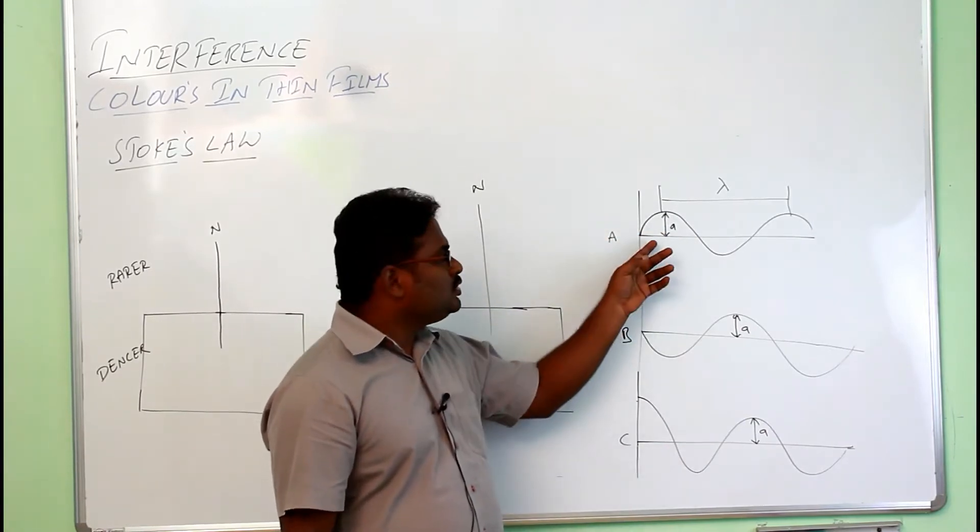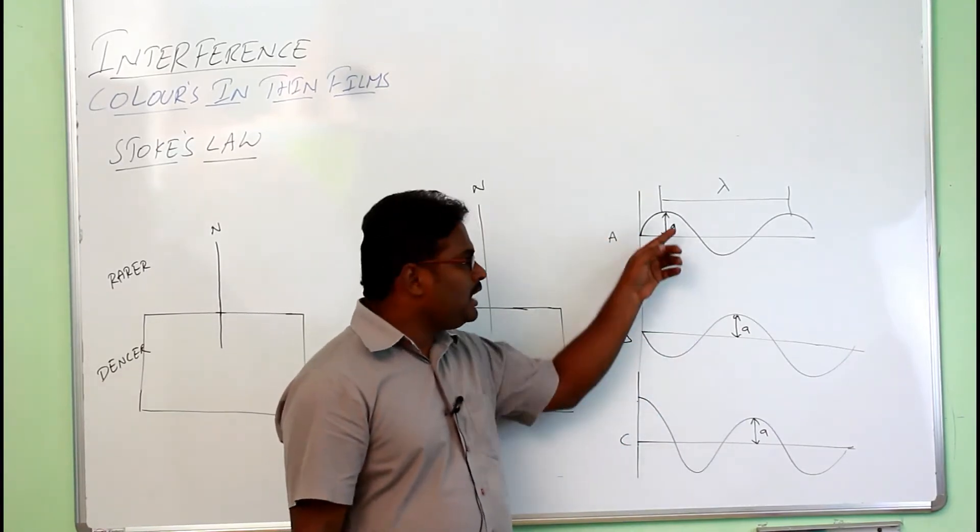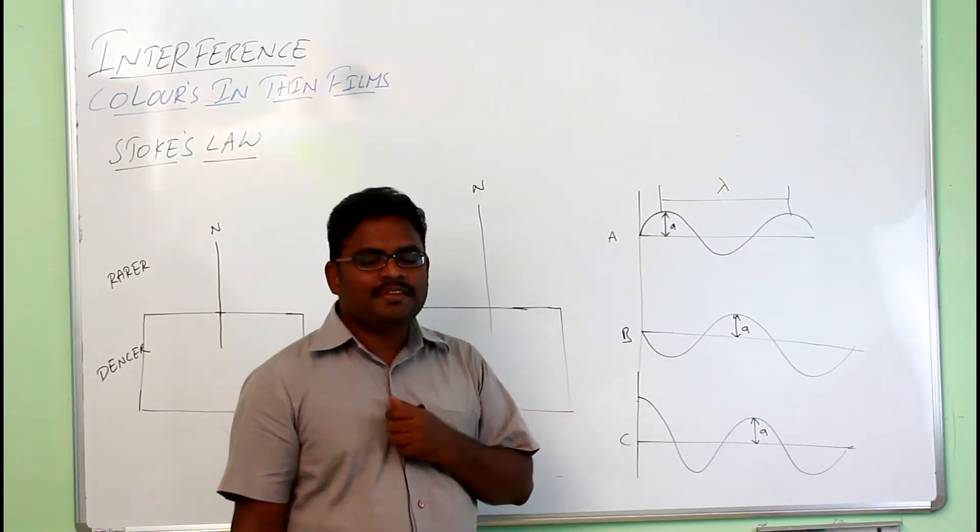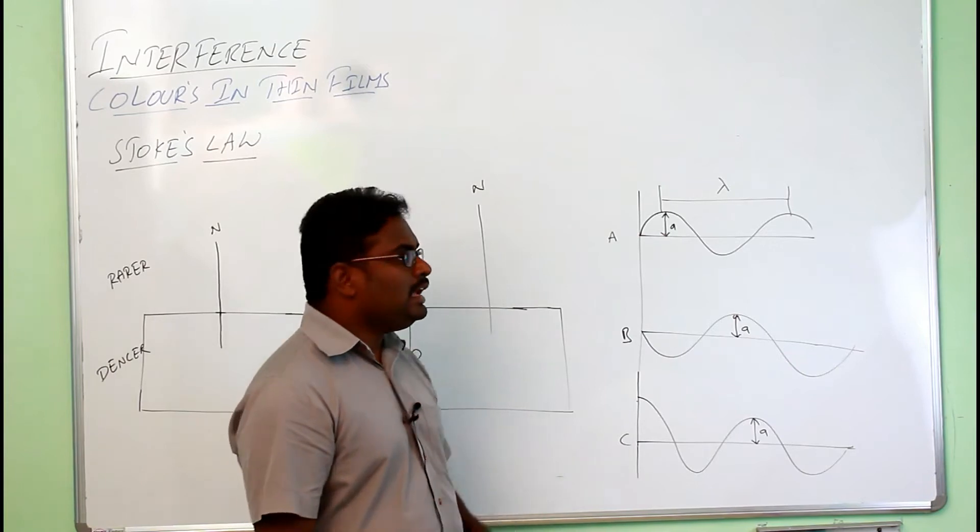Consider three types of waves. All are having same amplitude A and all have the equal wavelength lambda. Then, how can we tell the difference between all the waves? Like this.